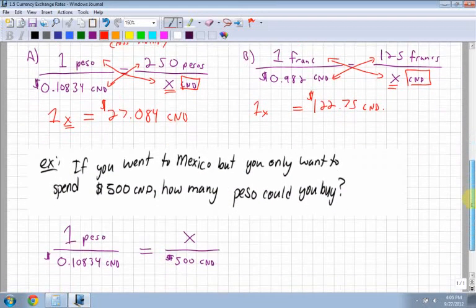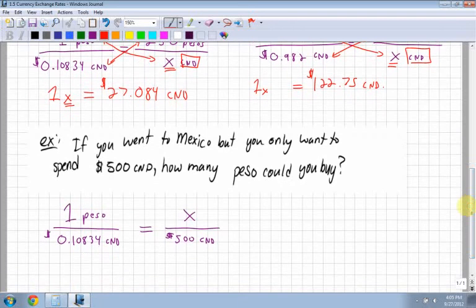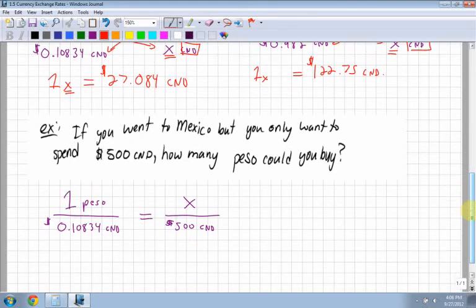Next example. If you went to Mexico but you only want to spend $500 Canadian, how many pesos could you buy? Now I'm looking for how many pesos I could buy, so I'm keeping pesos on top. I don't know how many pesos I can buy, but I know that I have $500 Canadian, so I'm going to leave the Canadian on the bottom. Pesos on top. And again you just cross multiply. It just happens to be that the x is in a different location.